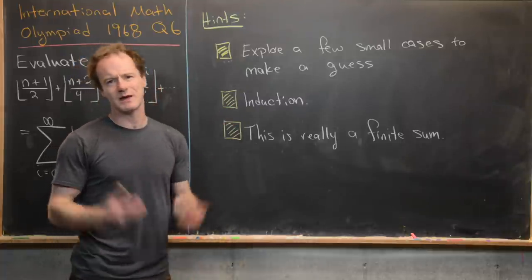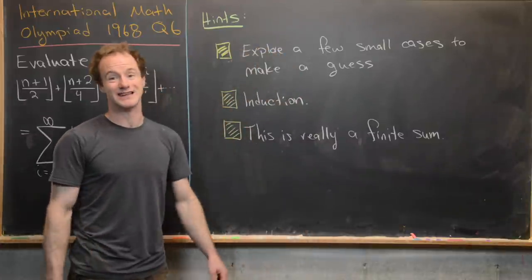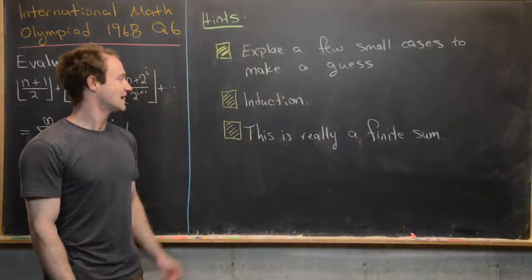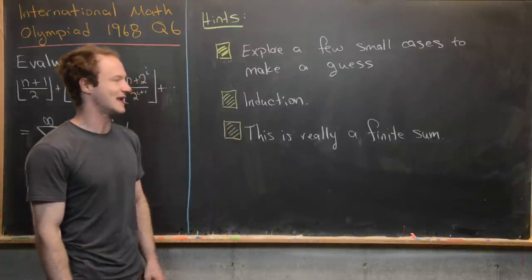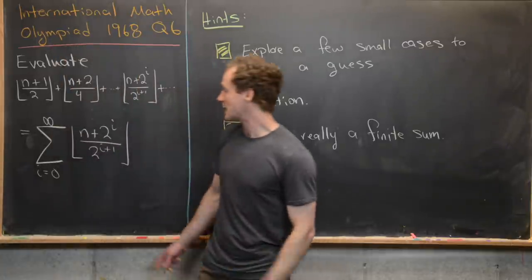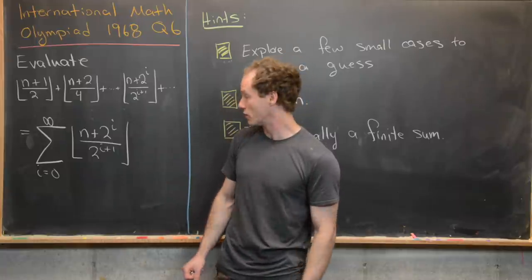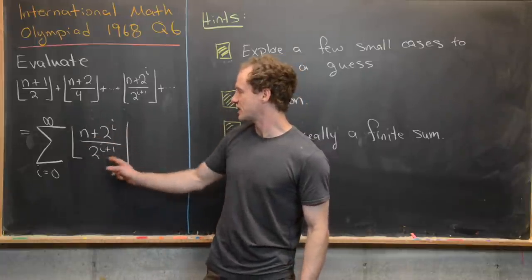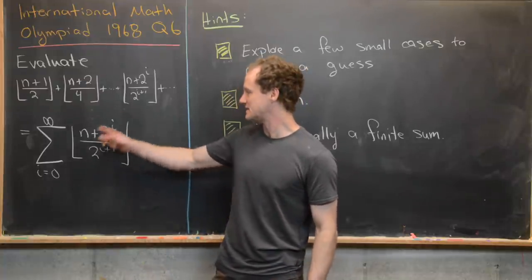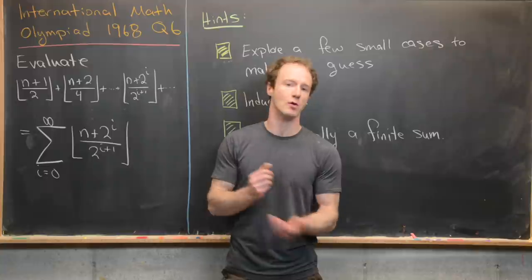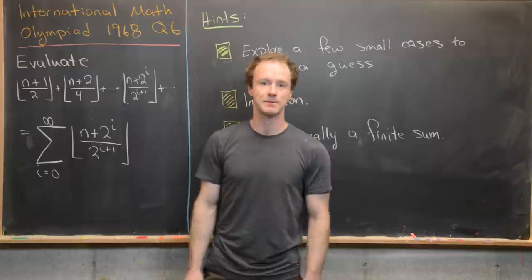The next hint is that you'll probably want to use induction. And another thing: this is really a finite sum, because the denominator is outstripping the numerator in terms of growth, which means eventually whatever's inside the floor will be less than 1. That means the floor will always be 0, truncating the sum at some finite number.